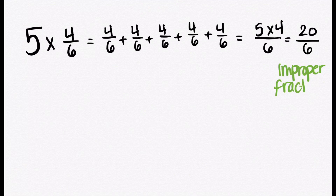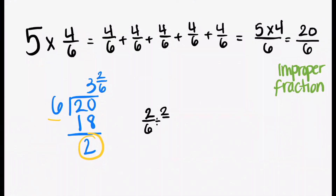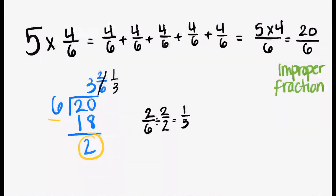So we're going to go ahead and divide 20 by 6. 6 fits in 3 times because that would be 18. We subtract and get 2, so it would be 2 sixths. It's 2 sixths because we had a remainder of 2 and we were working in parts of 6. But we're not done — we can simplify 2 sixths by dividing the top and the bottom by 2. The top would be 1 and the bottom would be 3. So our actual answer is not 3 and 2 sixths, but 3 and 1 third. So 20 sixths is actually 3 and 1 third.